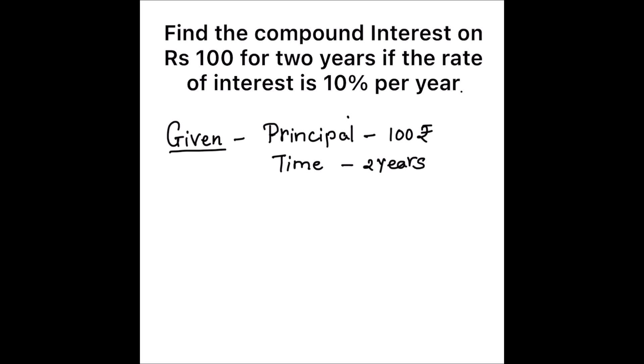Rate of interest is given as 10%. We will first find the amount after two years. The formula for amount is A = P(1 + R/100)^n, where P is the principal amount, R is the rate of interest, n is the number of years, and A is the amount.